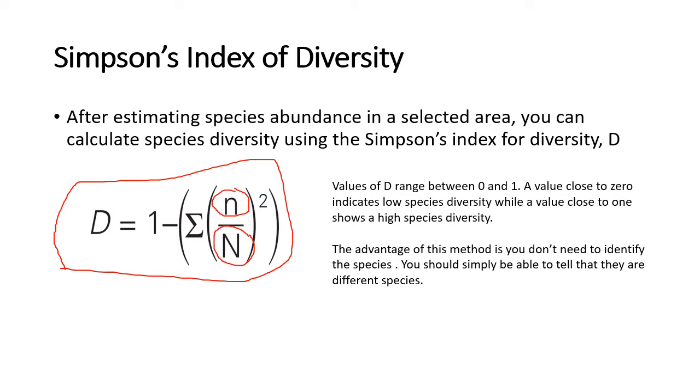The small n over here refers to the number, so basically the value in a data set while the big N is like a total number. So you basically take small n divided by big N, you square that, you take the sum of all of those values and you deduct it from one in order to get D.